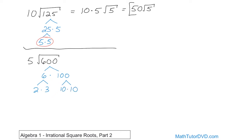Now there are a couple of different ways to proceed, and I want to do this problem two times to show you a variety of ways to do it. The first thing I notice is that I have a pair of tens, so I can stop. Anytime I see a pair, I can stop and pull that out.